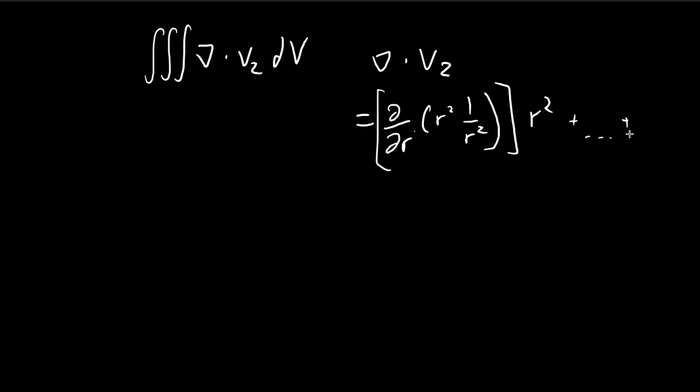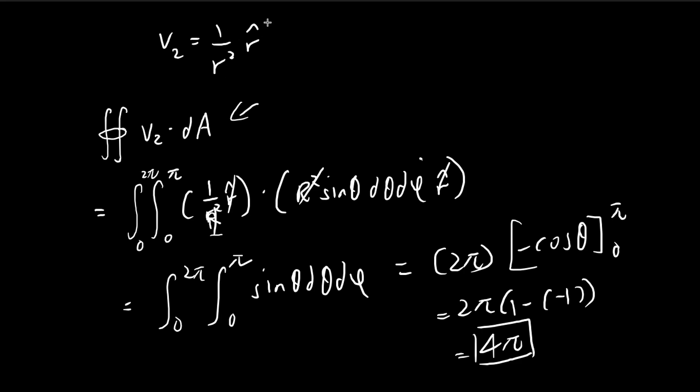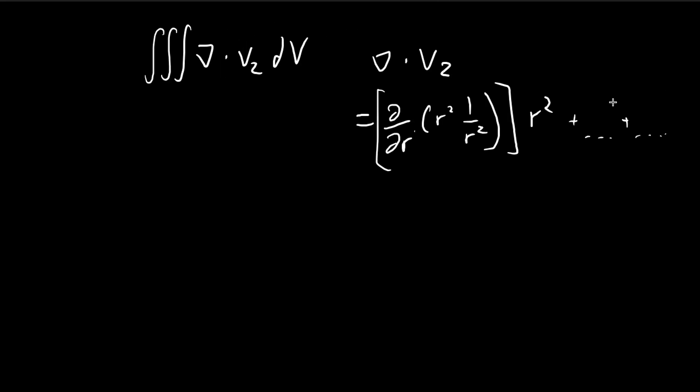There are other terms in theta and phi, but since this vector field has no theta or phi terms, those will just equal 0. If you differentiate this, you'll find this is a differentiation of a constant 1, so it equals 0.